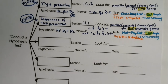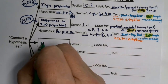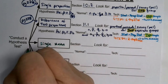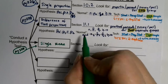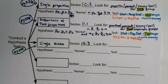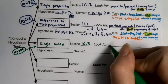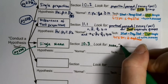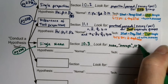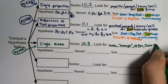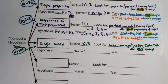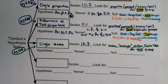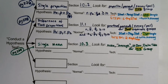For the single mean test — section 10.3, page 277 — it will involve the mean or average, and may have the standard deviation given or a data table provided. The key identifying feature is that it's all for one group only. It'll talk about average and have either a standard deviation or a data table, but only one group.